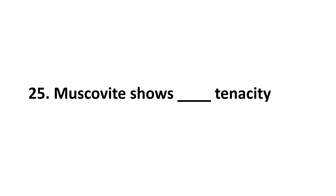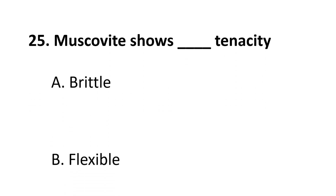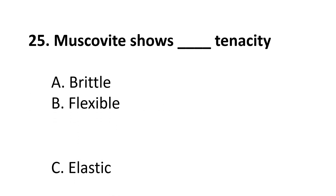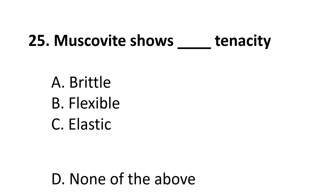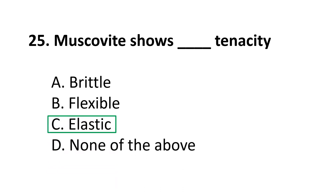Question 25: Muscovite shows what type of tenacity? A. brittle, B. flexible, C. elastic, D. none of the above. The correct answer is C, elastic.